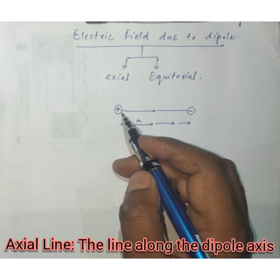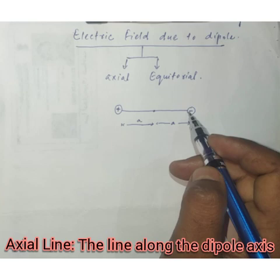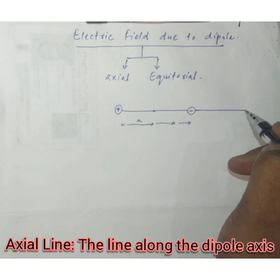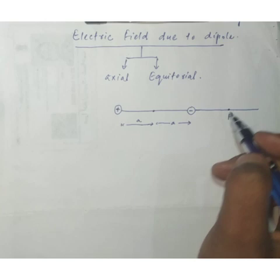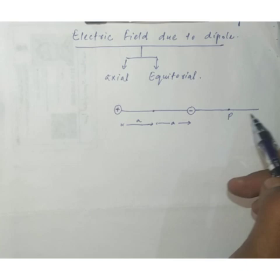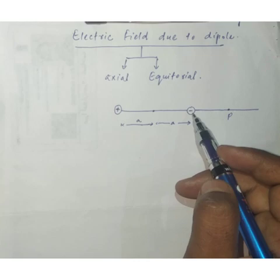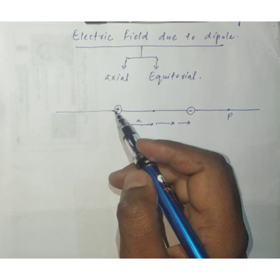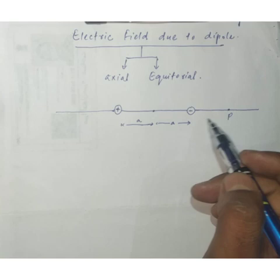The axial line is a line along the axis of the dipole — that is, the line connecting the positive charge to the negative charge. If we extend this line and place a point P on it, that point P is lying on the axial line. This line runs along the length of the dipole, and we can extend it in either direction — the whole line is called the axial line.